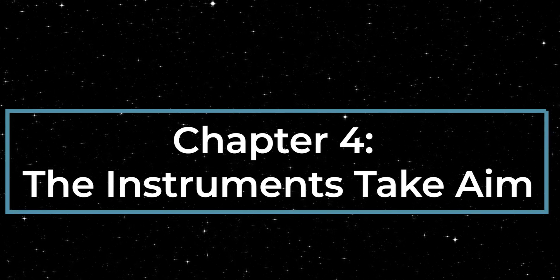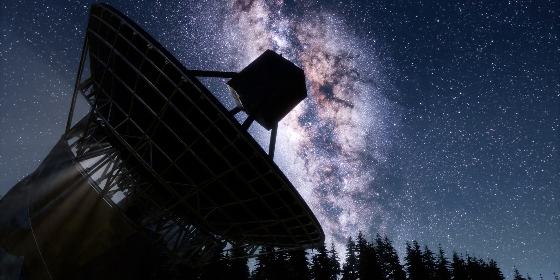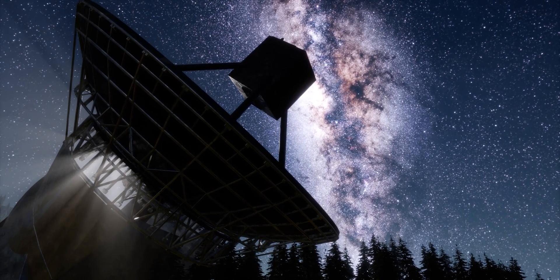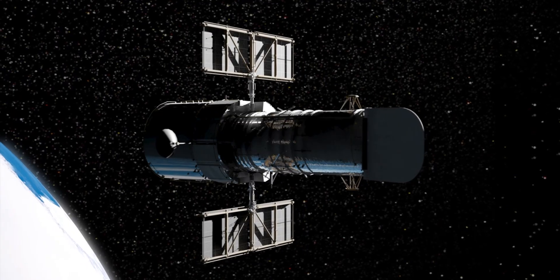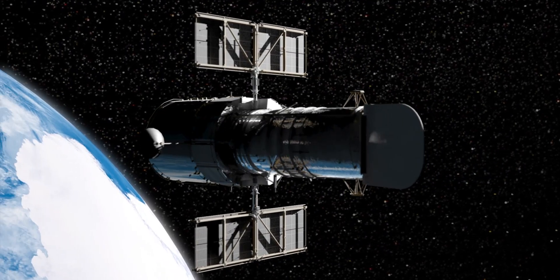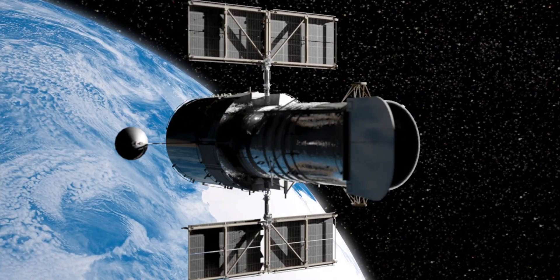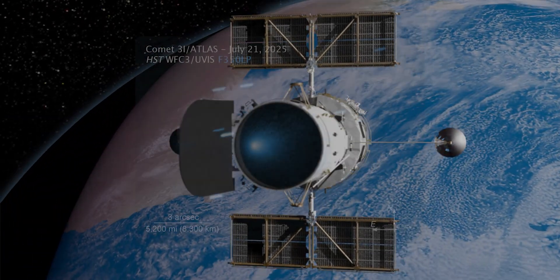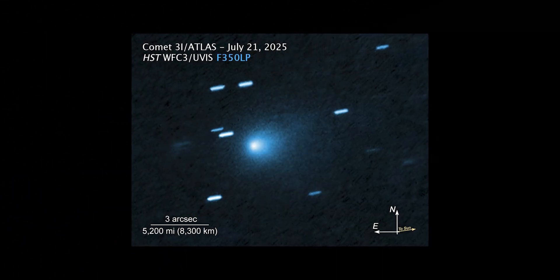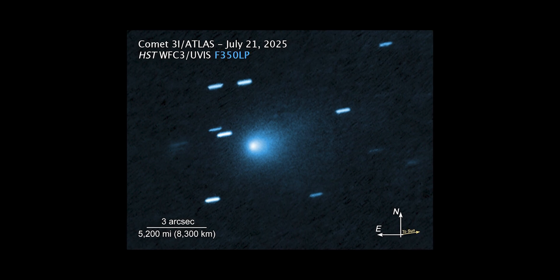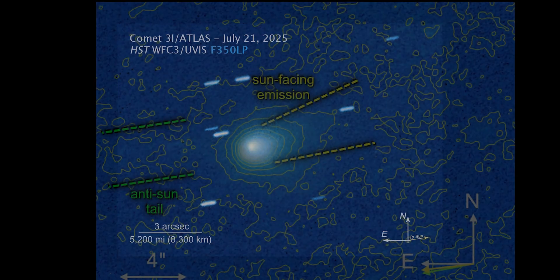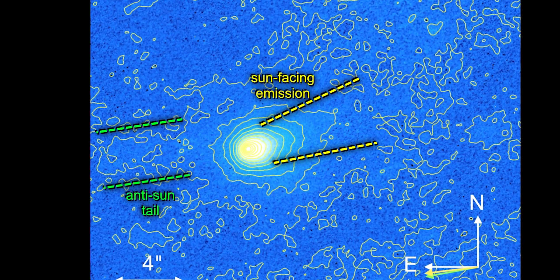By late July, 3I Atlas had become the most watched object in the solar system. Within weeks, three of humanity's most powerful observatories had already turned their gaze toward it. The first was the Hubble Space Telescope. On July 21st, 2025, Hubble tracked the comet as it swept through the inner system at almost 60 kilometers per second. The background stars blurred into streaks, a silent measure of the comet's impossible speed. At the center of the image, astronomers resolved a bright core surrounded by a teardrop-shaped coma.